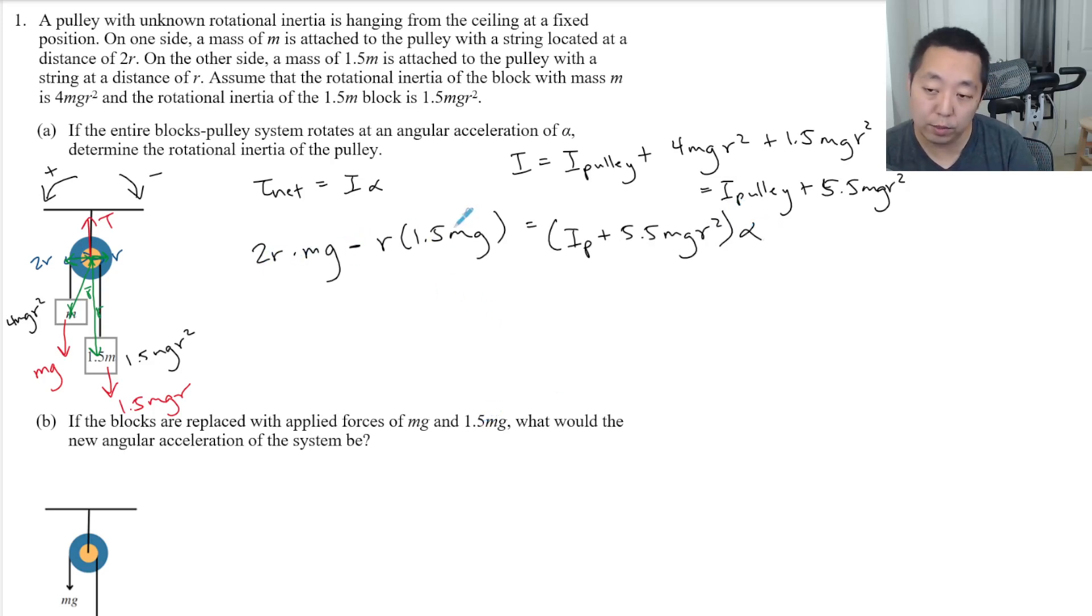This is 2R Mg, this is 1.5R Mg. This is 0.5 MgR is equal to I pulley plus 5.5 MgR squared times alpha.